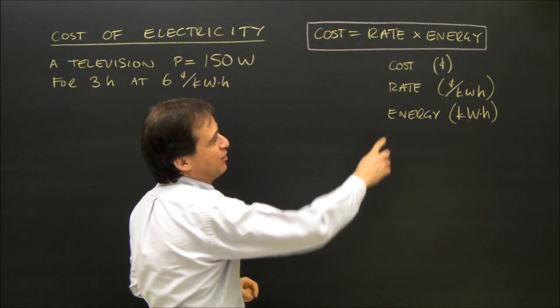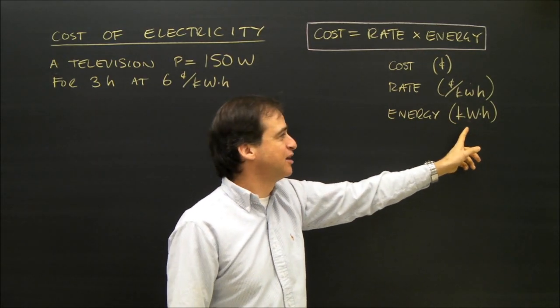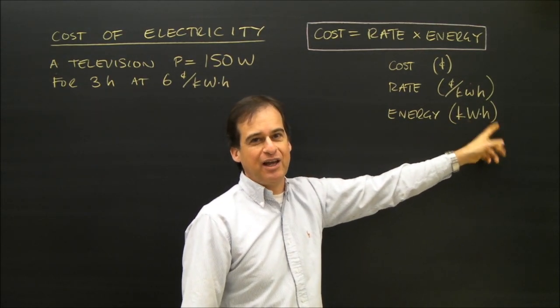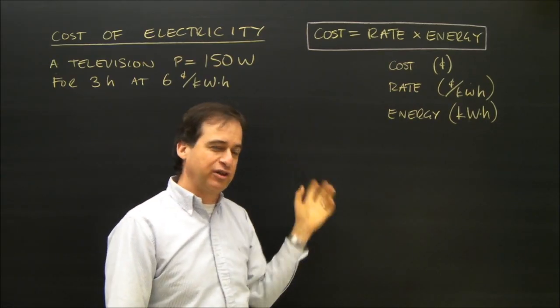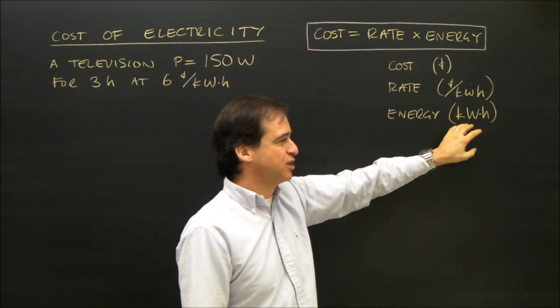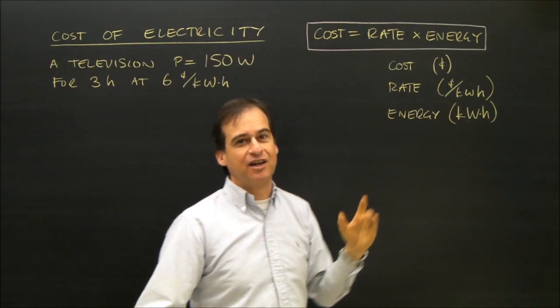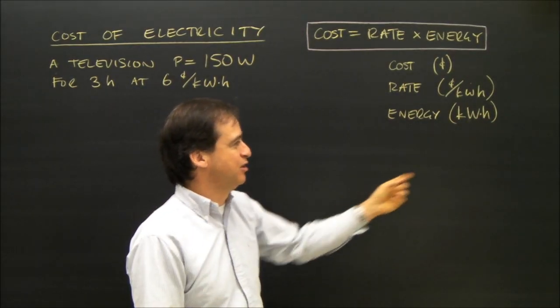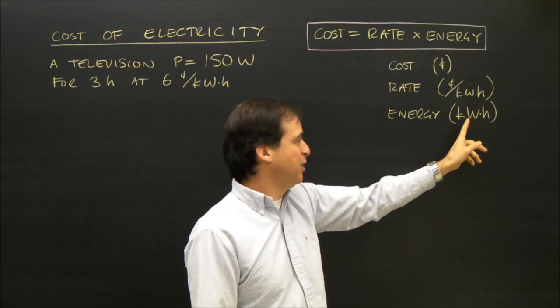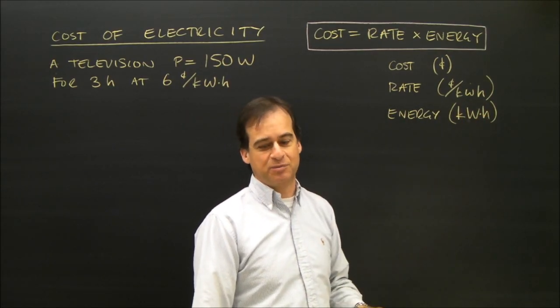Which means when we calculate the energy we're going to use here, we've got to make sure it's in kilowatts times hours. When we look at the units, we've got to make sure we're using kilowatts and not watts, and hours and not seconds. That's unusual because in physics we generally use energy and power in watts and time in seconds. But this is the one exception.